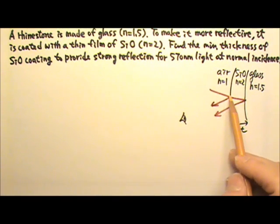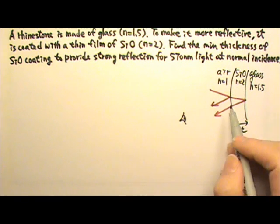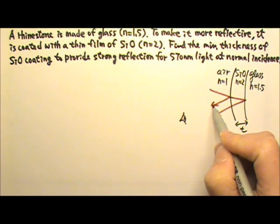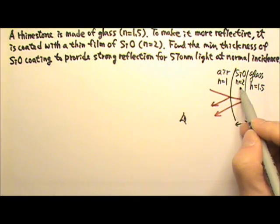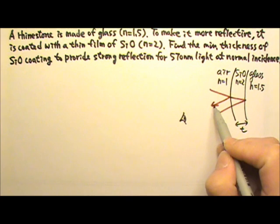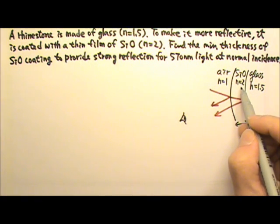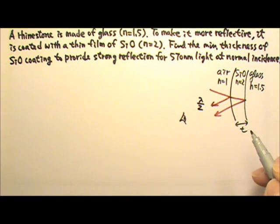The interference comes from the two reflections. Now let's see if the first reflection gives us a half-wavelength shift or not. This is n equals 1, that's n equals 2, so this reflection is being reflected off a bigger n, therefore a peak is going to turn into a trough. That means we get a half-wavelength shift.